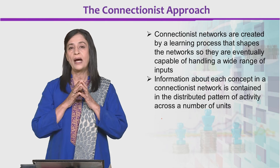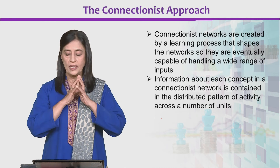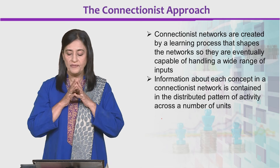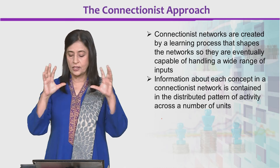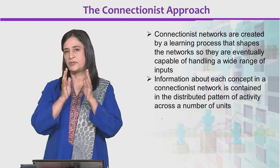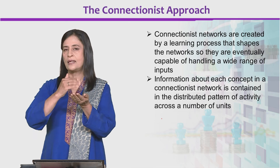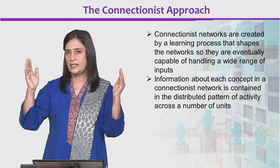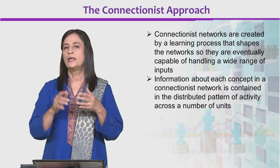Connectionist networks are created by a learning process that shapes the networks so they are eventually capable of handling a wide range of inputs. Information about each concept in a connectionist network is contained in the distributed pattern of activity across a number of units. Canary is the concept, its representation, and then the property — can it swim, can it fly — and so we see that it is distributed across the network in these different units.